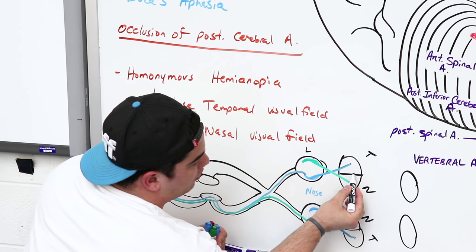Two additional tracts run through the territory of the posterior inferior cerebellar artery. First, the spinothalamic tract carries pain and temperature — if damaged, there's contralateral loss of pain and temperature sensations from the body. Second, the spinal nucleus of the trigeminal system carries pain and temperature from the face. If the PICA is occluded, this can also be damaged, causing ipsilateral loss of pain and temperature sensations on the same side of the face.